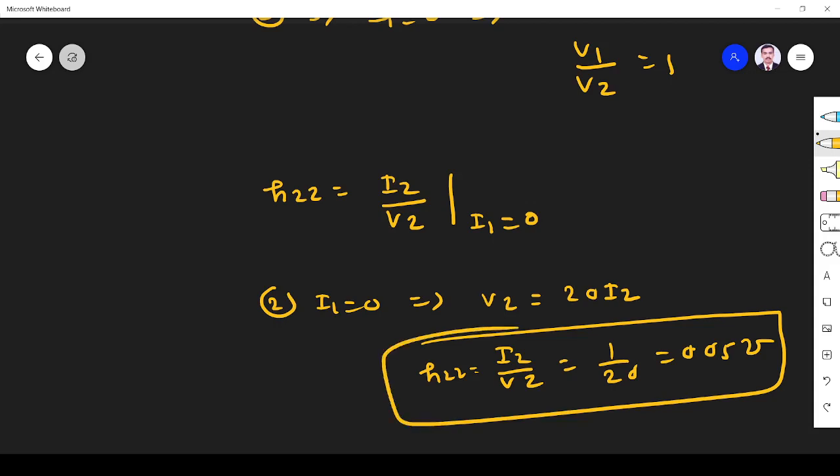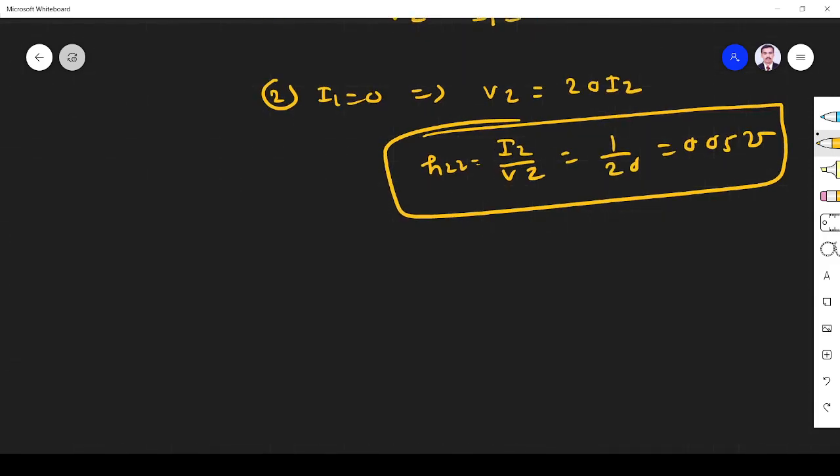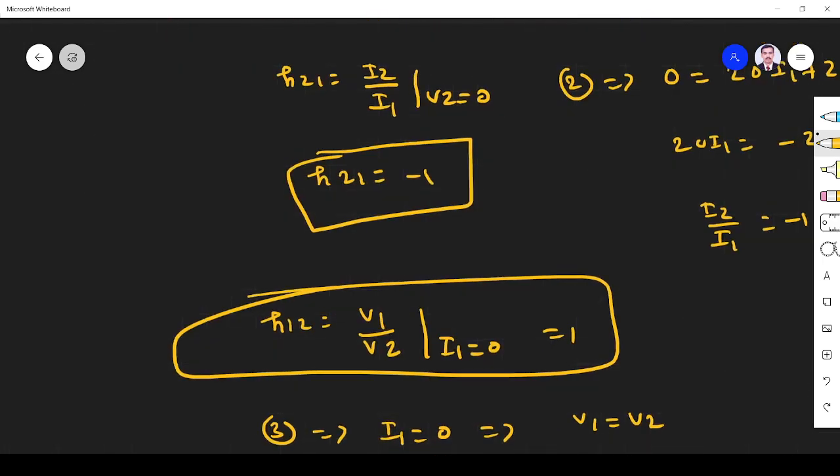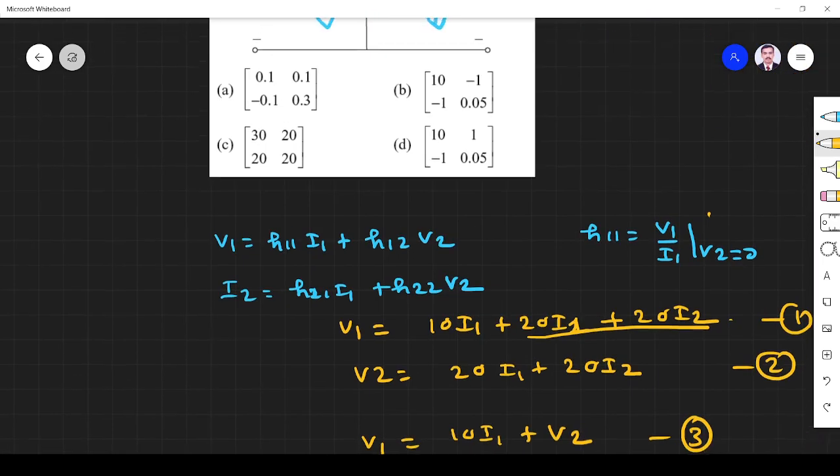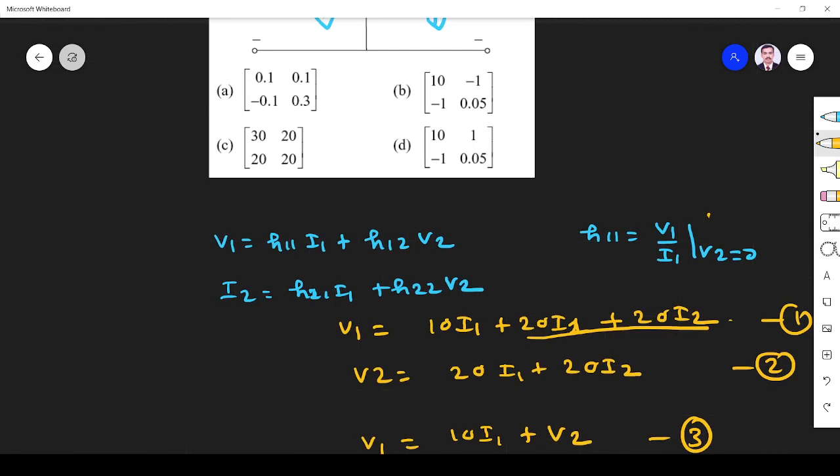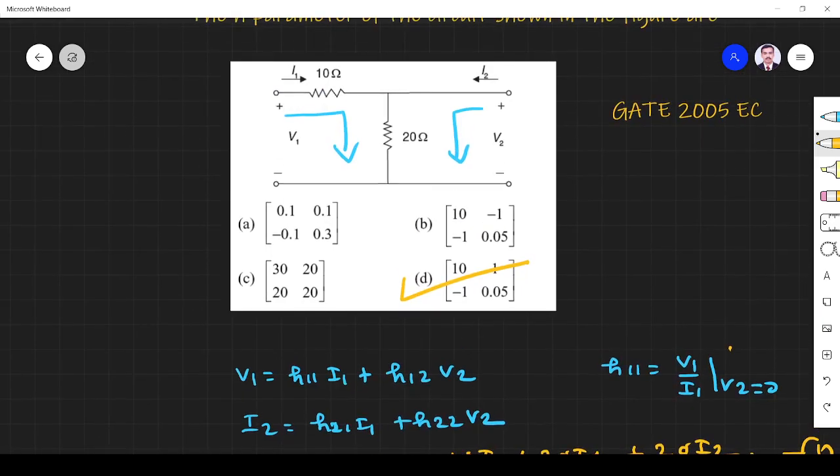The h-parameter matrix values are: h11 is 10, h12 is 1, h21 is minus 1, and h22 is 0.05. So the matrix is [10, 1; -1, 0.05]. Option D is the right answer. Thank you.